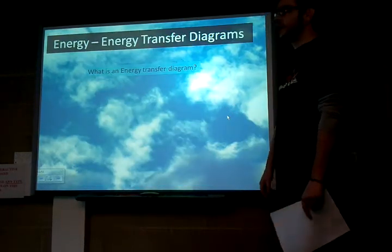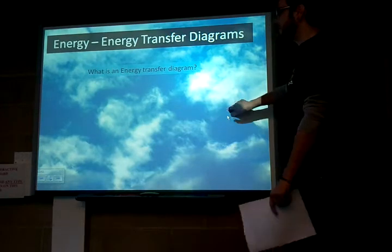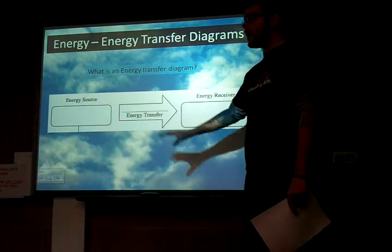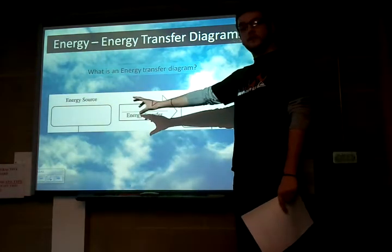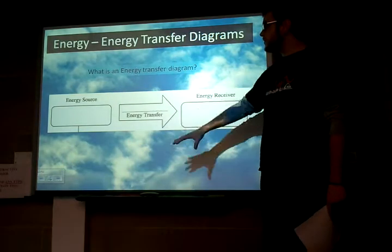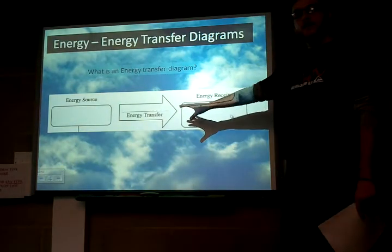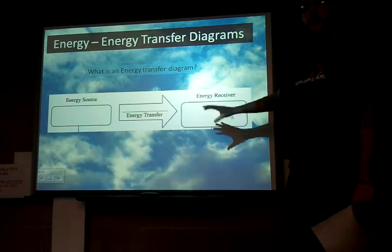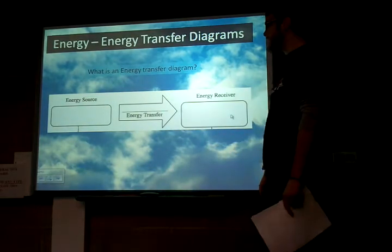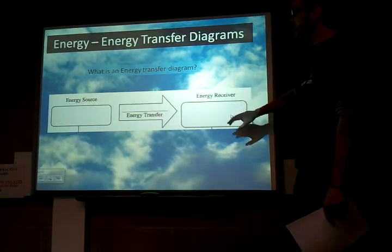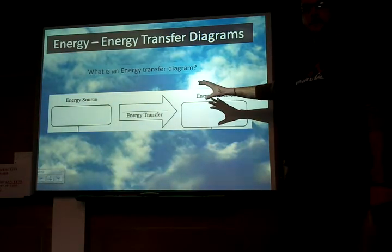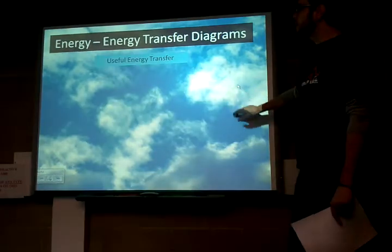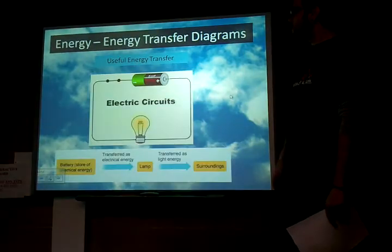So what is our basic energy transfer diagram? What it shows us is where our energy source comes from, how that energy source is transferred, and what is the resultant or the receiver of that energy source. They're all basically around this kind of structure, so let's have a look at what we've actually got here.